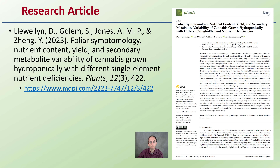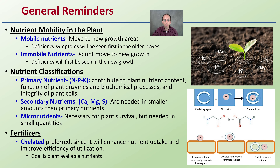Some of these images are based off a research article — I provide the citation here if you want to get into more detail. A general reminder: for mobile nutrients, they move to new growth areas, meaning deficiency symptoms will first be seen in older leaves. In contrast, immobile nutrients don't move to new growth, so their deficiencies will first be seen in the newer growth regions of the plant.